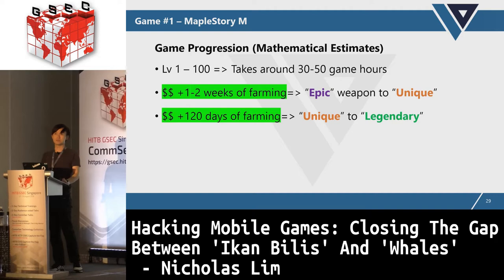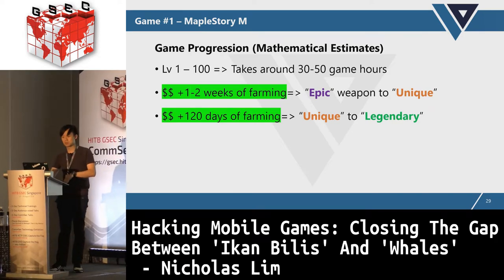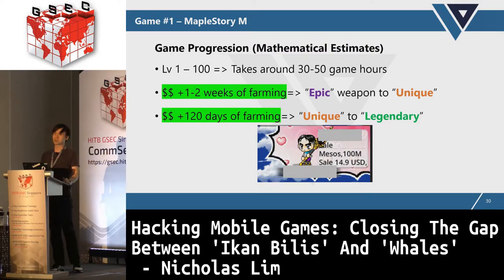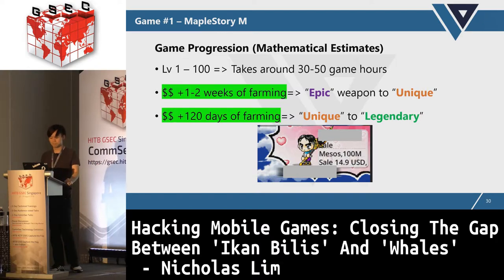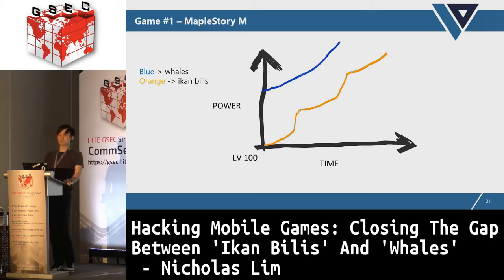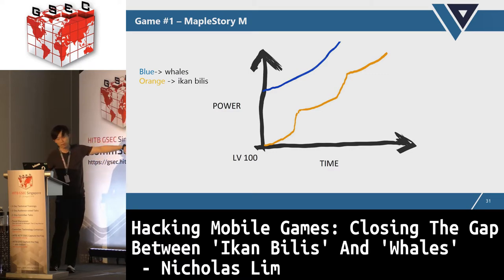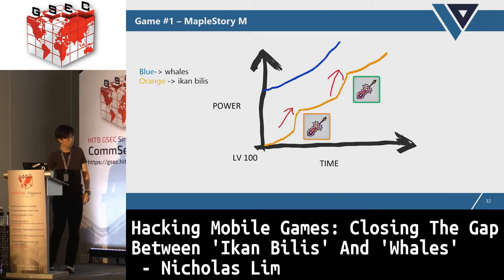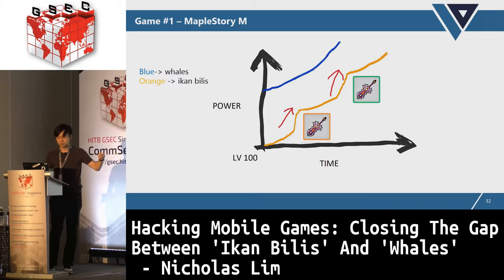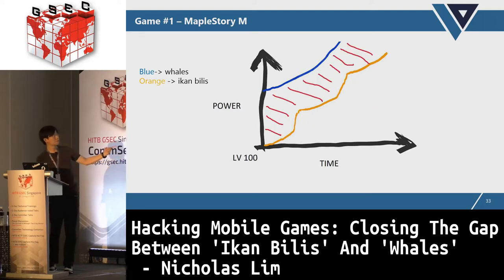Weapons are important because higher-tier weapons deal more damage and let you level up faster. But whales don't like to wait, so they can shorten this process. There are mainly two methods for MapleStory: either buy in-game premium items, or resort to unauthorized third-party sellers. Mesos is an in-game currency. The blue line represents whales, orange represents ikan bilis. At level 100, the whale starts stronger, while the ikan bilis experiences two power spikes: the Unique weapon at one to two weeks, and the Legendary at 120 days. But we still have the gap.